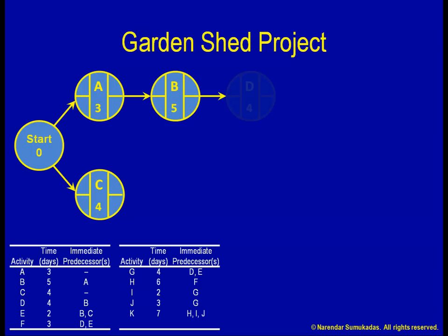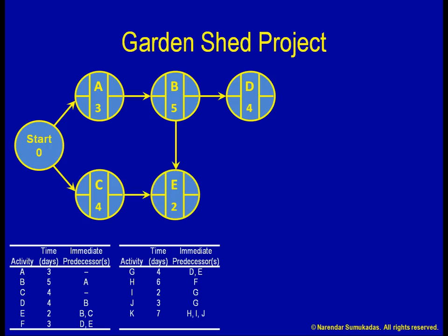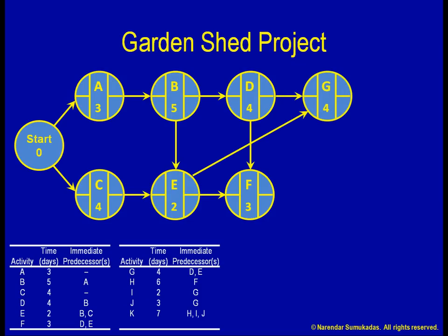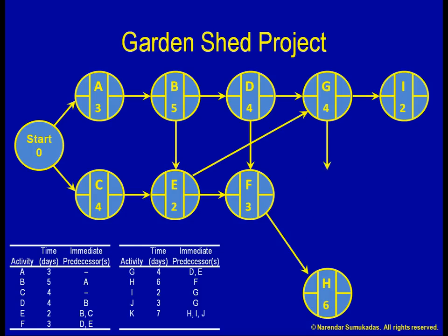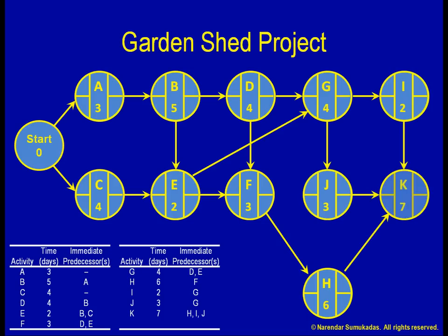Activity D depends on B. E depends on both B and C. F depends on both D and E. G depends on both D and E. H depends on F. I depends on G. Finally, K depends on H, I, and J. Our project ends with K, so we don't have any loose ends on this side. If we did, it would be good practice to finish with an end milestone.